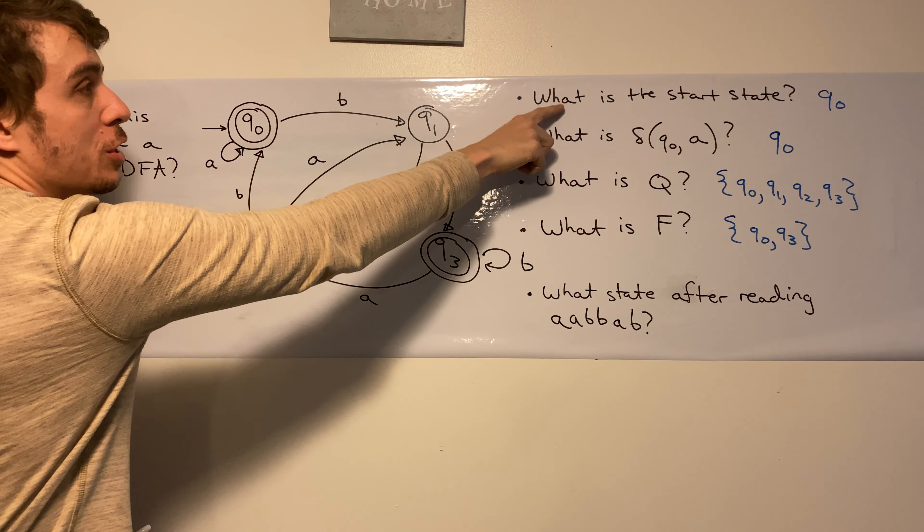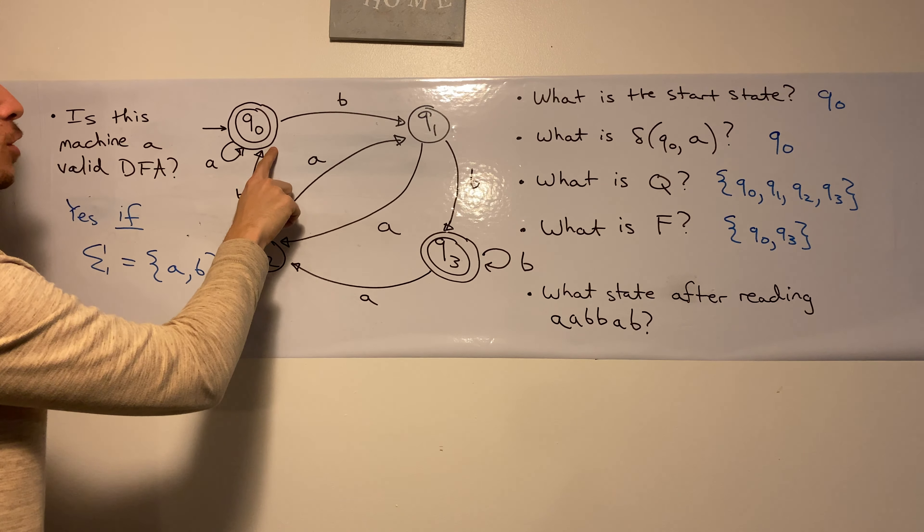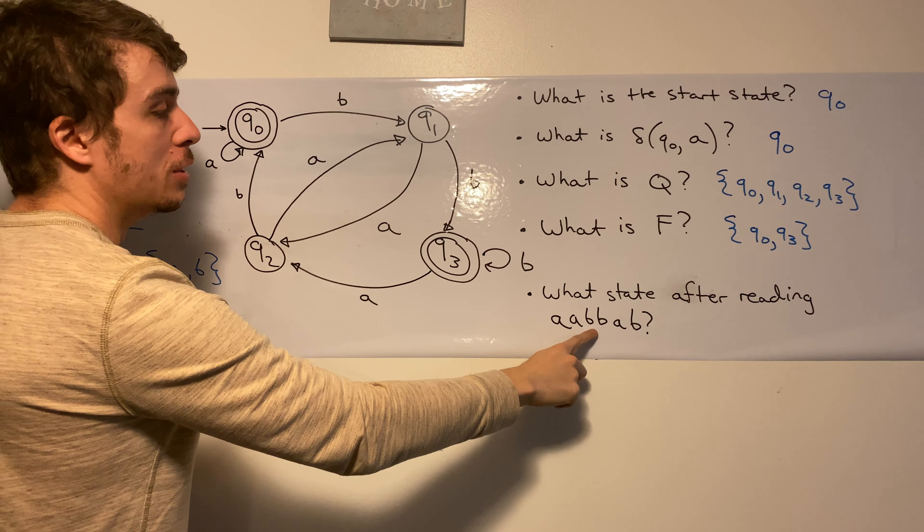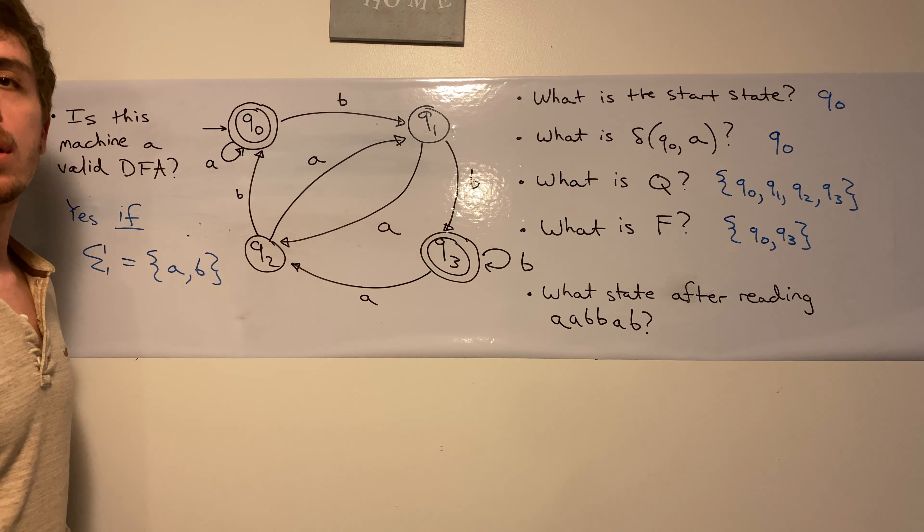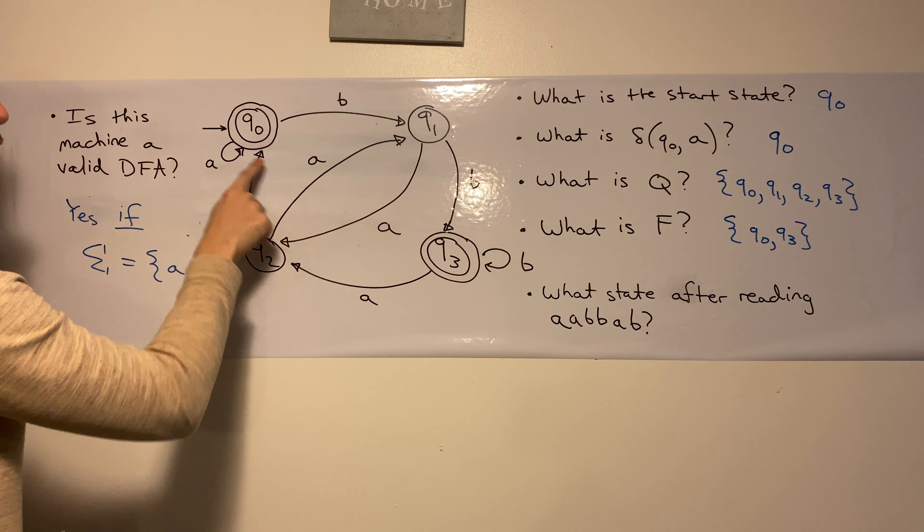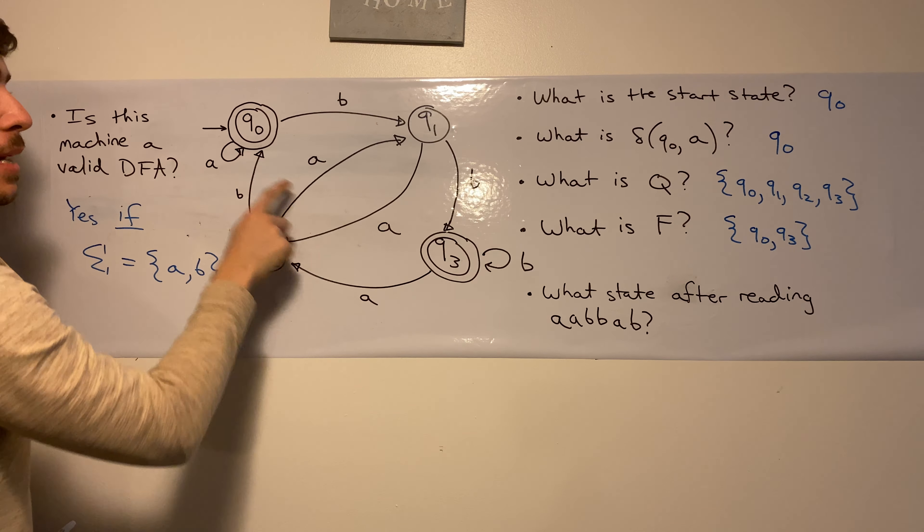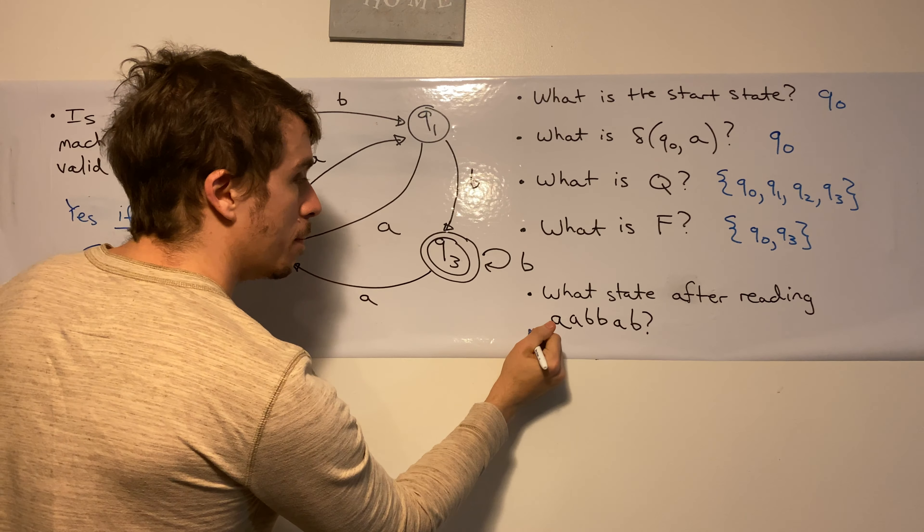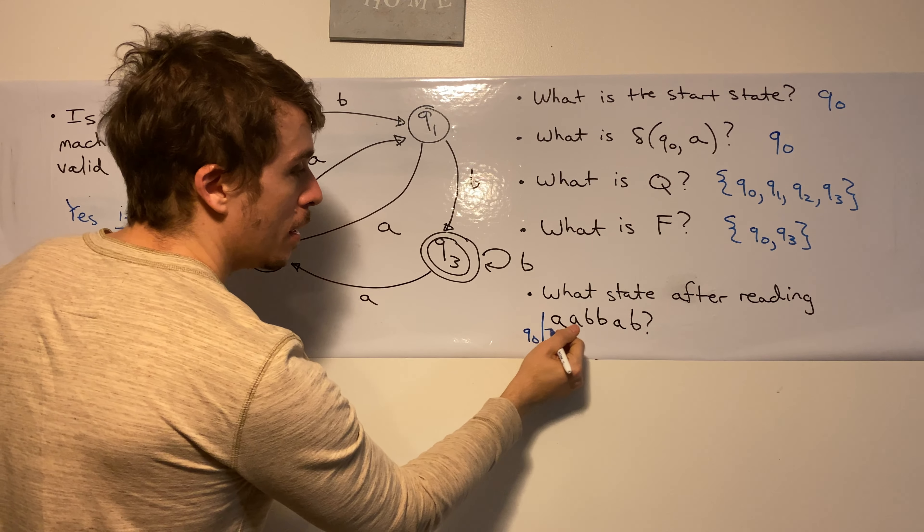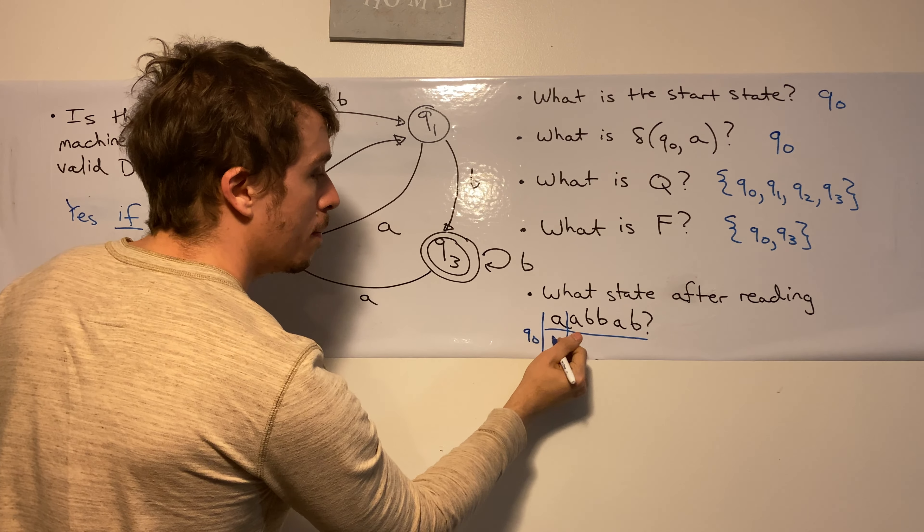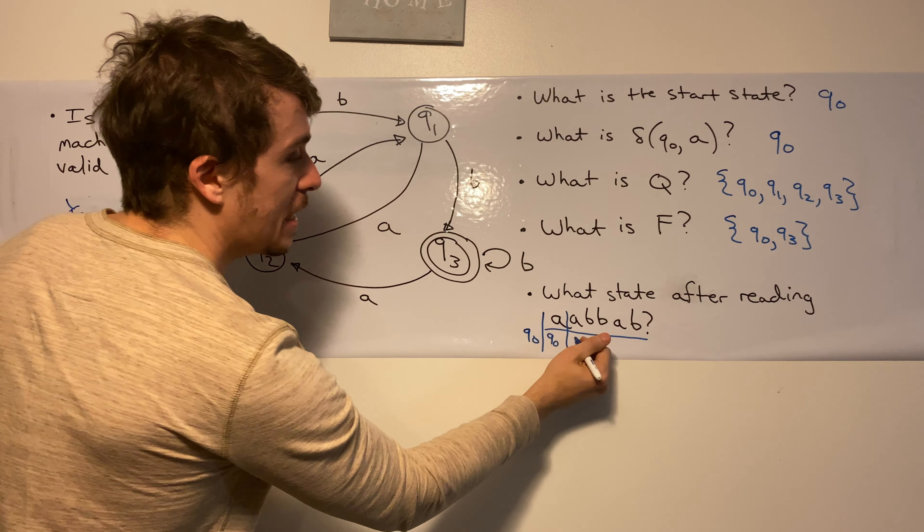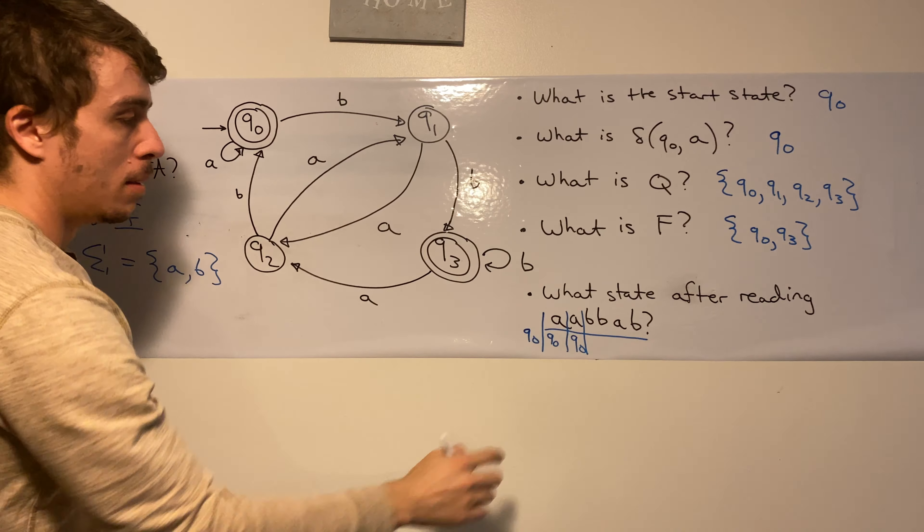We always will start in the start state, which is Q0, which is the question that we answered earlier. So we're in Q0 right now. And what we do is we follow the transitions one at a time and then just record what the state we're in at the end is. So Q0, we read an A, we come back to Q0 because that's what the previous question had. So after being in Q0, by this I mean we start in Q0, and then after we read the first A, we're in Q0 again. And because it's a DFA, the next A is still going to have us be in Q0.